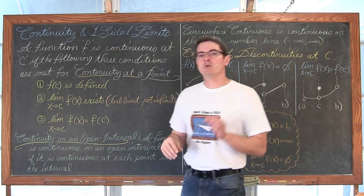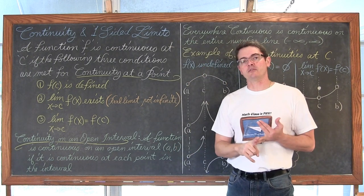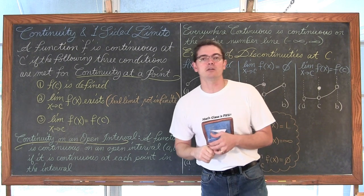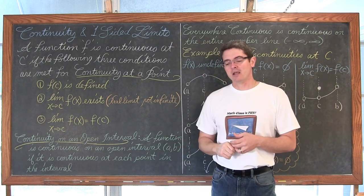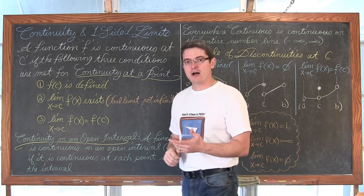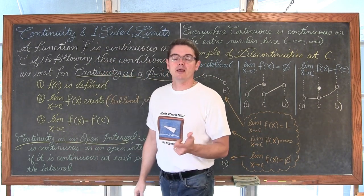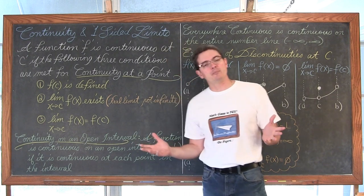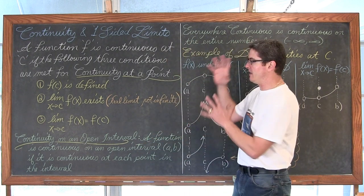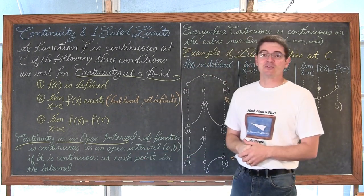The continuity of a function. In this video we will define continuity on open and closed intervals and show how one-sided limits allow us to check for continuity on closed intervals. I will be showing you the properties of continuity and defining the two different types of discontinuity: removable and non-removable. Then we will finish up by doing examples with different settings to help you completely understand this concept.